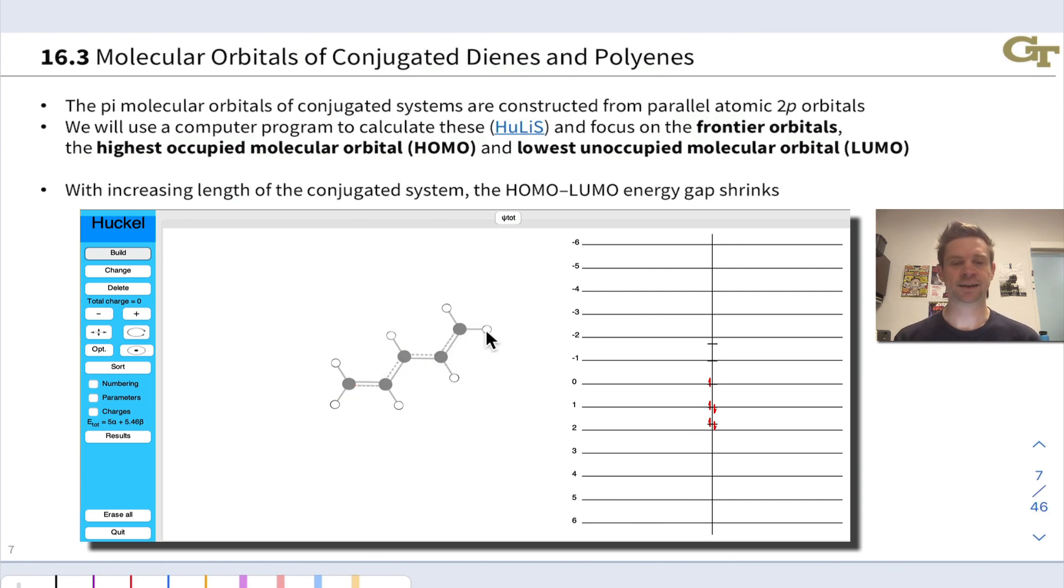If I add another double bond here to create hexatriene, 1,3,5-hexatriene, now I have six pi molecular orbitals. I've got a smaller HOMO-LUMO gap than 1,3-butadiene. And if I look again at the HOMO and LUMO, I see I have one, two nodes in the HOMO and three nodes, one additional node in the LUMO here.